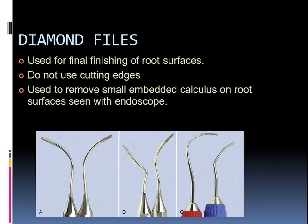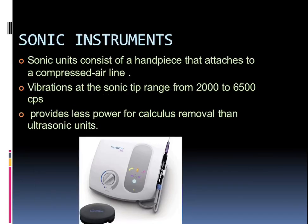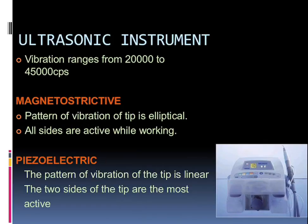Sonic instruments are units that consist of an end piece that attaches to a compressed air line; the vibrations at the sonic tip range from 2,000 to 6,500 cps. They provide less power for calculus removal than ultrasonic units. Ultrasonic instruments have a vibration range from 20,000 to 45,000 Hz. There are two types: magnetostrictive — with an elliptical pattern of vibration where all sides of the tip are working — and piezoelectric — with a linear pattern of vibration where the two sides of the tip are most active. This can be an MCQ — remember this.